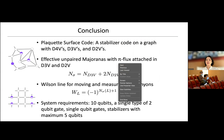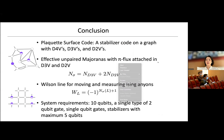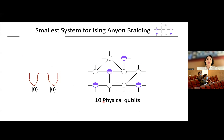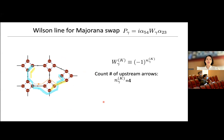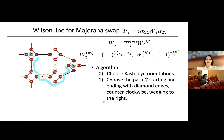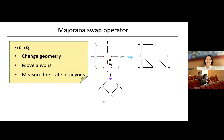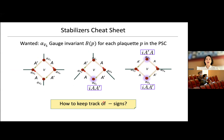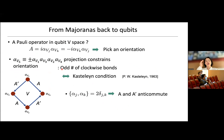Q&A: A question about understanding the Kasteleyn orientation better — is this orientation imposed so that the number parity sector is chosen either odd or even on each qubit? The speaker responds: No, the first step was to choose the orientation on each qubit, which was a convenient graphical way of keeping track of the parity projection. Because of the parity projection, the two operators defined in one direction have to be the same, and the two in the other direction also have to be the same.